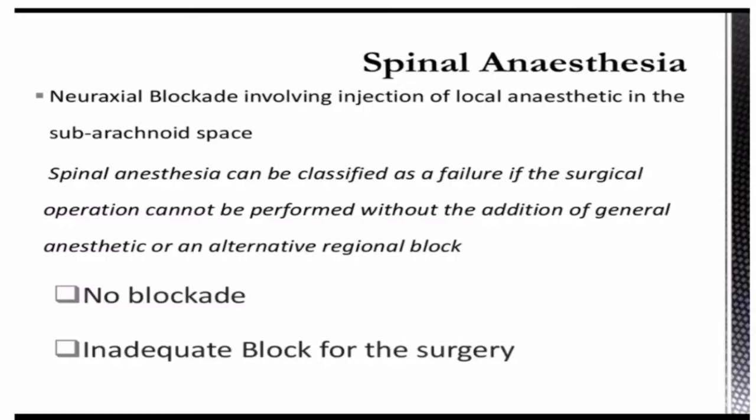Today we'll talk about failed spinal anesthesia. Spinal anesthesia is neuraxial blockade involving injection of local anesthetic in the subarachnoid space. Spinal anesthesia can be classified as a failure if the surgical operation cannot be performed without the addition of general anesthetic or an alternative regional block.